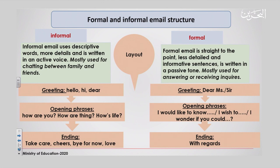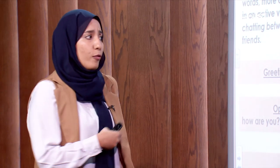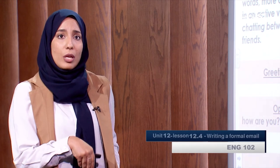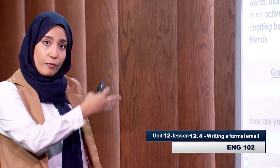Whereas the other type is the formal email. Formal email is straight to the point, less detailed and informative sentences, is written in a passive tone, mostly used for answering or receiving inquiries. The formal email is usually when you're asking a question, when you're requesting certain things from your instructors, your lecturers, your doctors, or for example, ordering something from Amazon and it didn't yet reach — here is when you write the formal email.